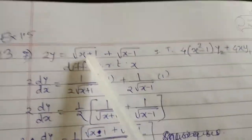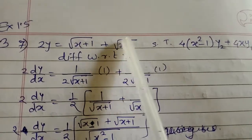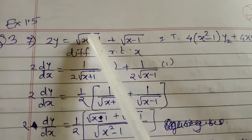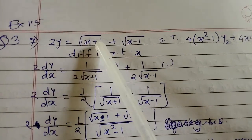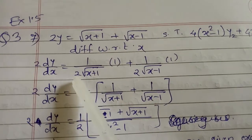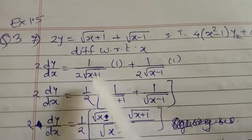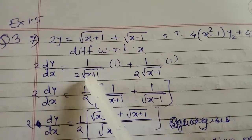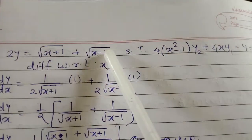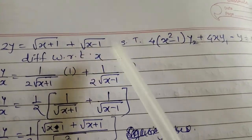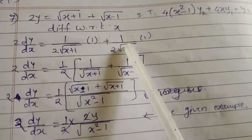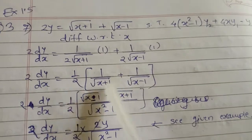The first step is to differentiate with respect to x. We get 2·dy/dx. For root(x+1), applying the formula d/dx[√x] = 1/(2√x), we get 1/(2√(x+1)) times the derivative of (x+1), which is 1. Similarly, plus 1/(2√(x-1)) times the derivative of (x-1), which is also 1. So 1/2 is common on the right side.